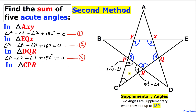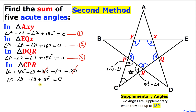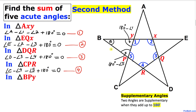Now let's focus on triangle CPR. Once again I have added the angles and set them equal to 180 degrees. The 180-degree terms cancel and after simplifying we get equation number four.